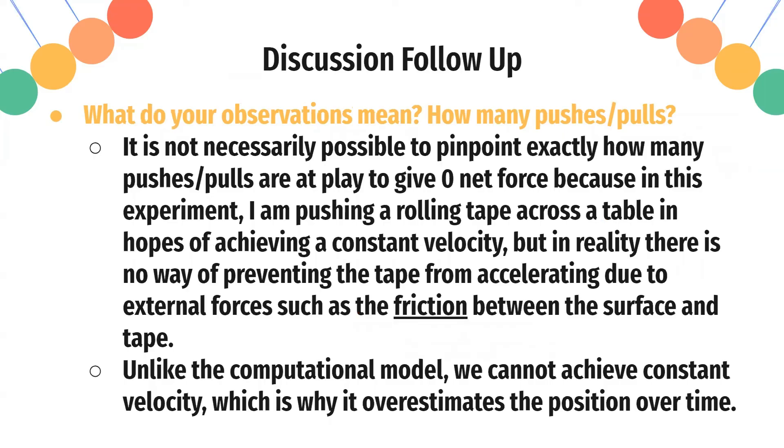And we can't actually pinpoint exactly how many pushes and pulls are at play here to give zero net force, because I, a human, am pushing the rolling tape across the table in hopes of achieving constant velocity. But in reality, there's no way of preventing the tape from accelerating due to external forces such as friction between the surface and tape. This is unlike the computational model, because it can achieve constant velocity, but in the real world, there's always forces at play such as friction that'll slow down the object, and we cannot exactly pinpoint that.